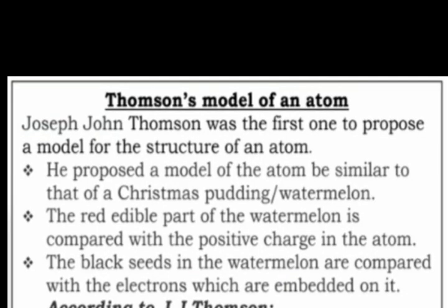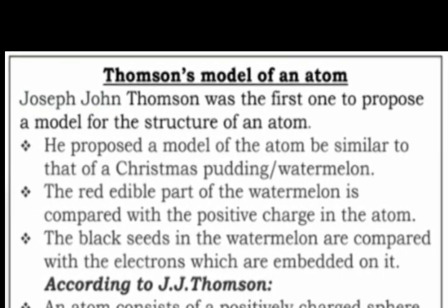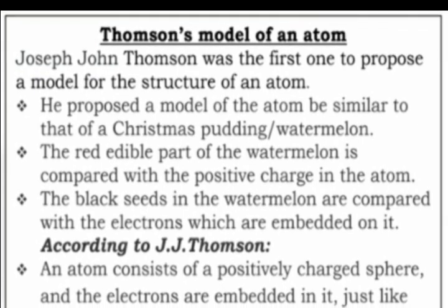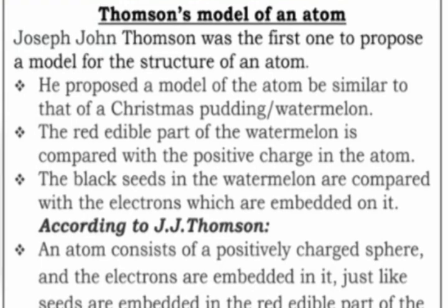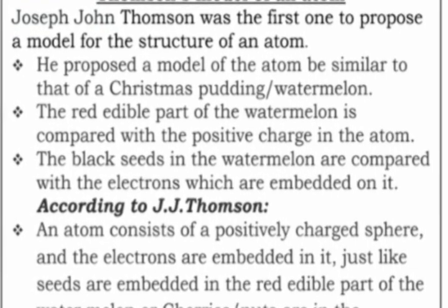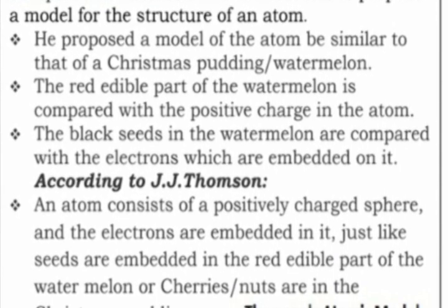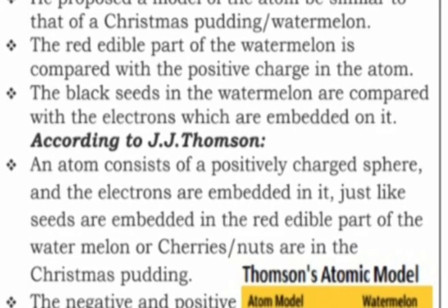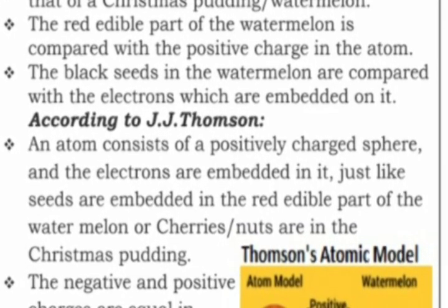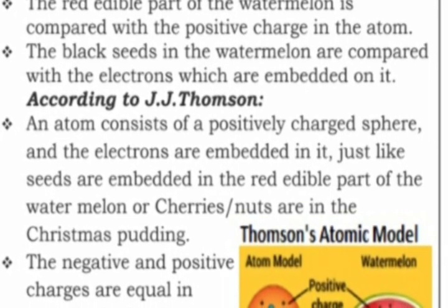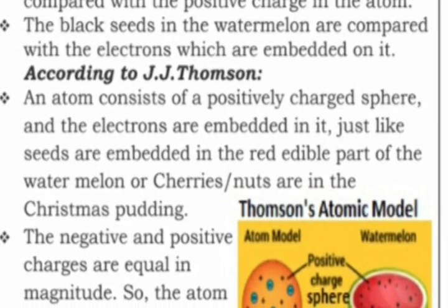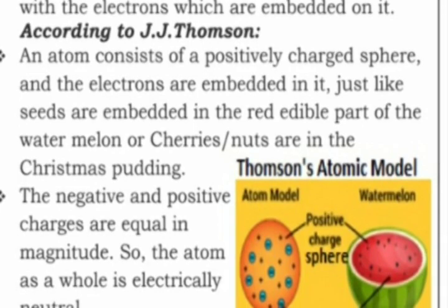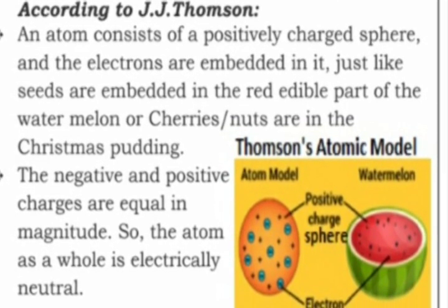Question three: Explain in brief Thomson's model of the atom with the help of a suitable diagram. Joseph John Thomson was the first one to propose a model for the structure of an atom. He proposed the atom be similar to a Christmas pudding or watermelon. The red edible part of the watermelon represents the positive charge, and the black seeds represent the electrons embedded in it. The atom consists of a positively charged sphere with embedded electrons, and the negative and positive charges are equal in magnitude, so the atom as a whole is electrically neutral.